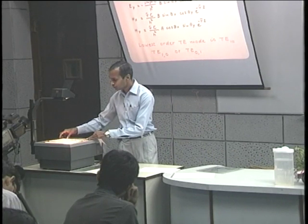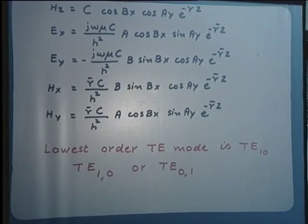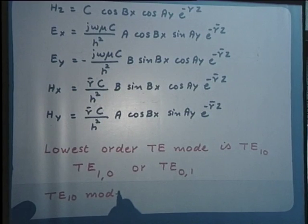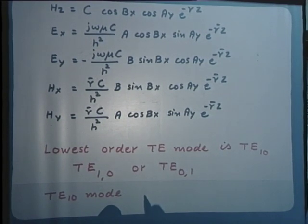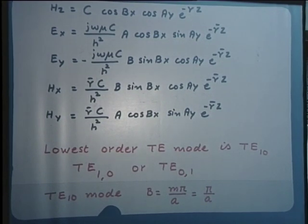We consider the field components for the TE10 mode. What are the various parameters simplifying to for m equal to 1 and n equal to 0? We have β equal to mπ/a in general, and for m equal to 1 it goes to π/a.